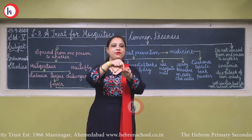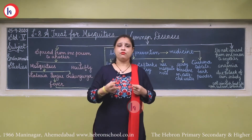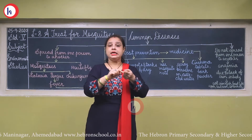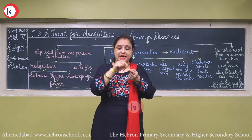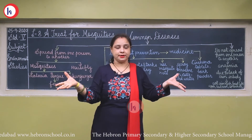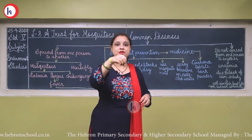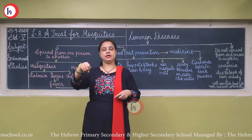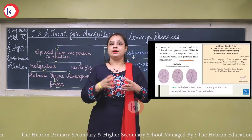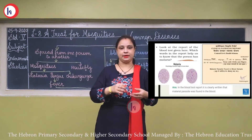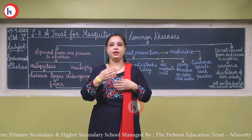For the blood test, they will prick your finger and take 2-3 drops of blood. With that blood sample, they will look into the microscope. The sample, which is very small, will look bigger under the microscope. In that sample they will find the bacteria of malaria, and in the report it will be written that there is a malarial parasite in your blood. Then the doctor will give you tablets accordingly.